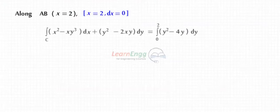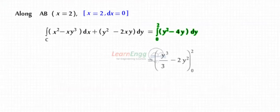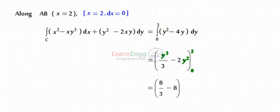Along AB, x equals 2, which implies dx equals 0. By substituting these values, we get minus 16 by 3.